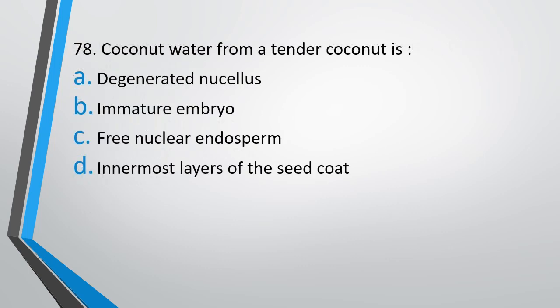Question number 78. Coconut water from a tender coconut is: (A) degenerated nucellus, (B) immature embryo, (C) free nuclear endosperm, (D) innermost layer of seed coat. The correct answer is option C, free nuclear endosperm.